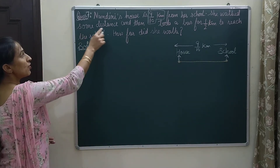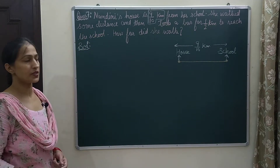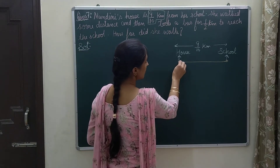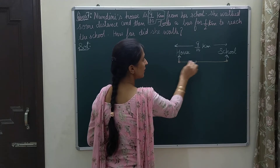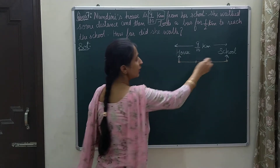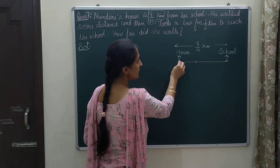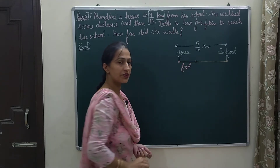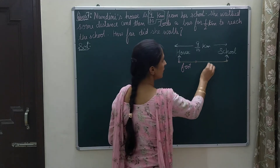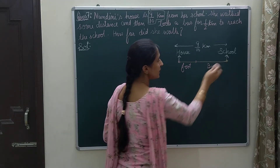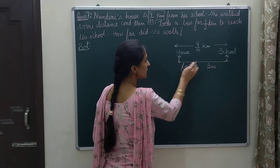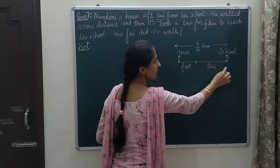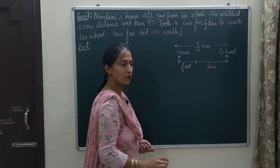Next, she walked some distance and then took a bus. She traveled some distance from the house by foot, and after traveling that distance she took a bus to reach the school. So some distance she traveled on foot and the rest she traveled by bus.